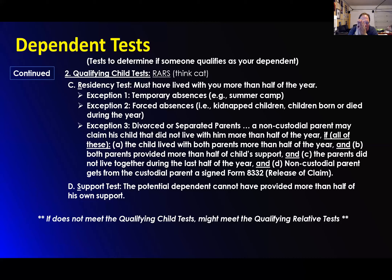Those are the residency rules. They must have lived with you more than half the year. Use common sense — these exceptions are pretty much ridiculous. To count kidnapping a child as an exception to the rule — the fact that they even have that in there is proof that mankind should probably go away sometimes. So if they lived with you more than half the year, that's the test.